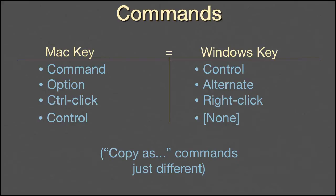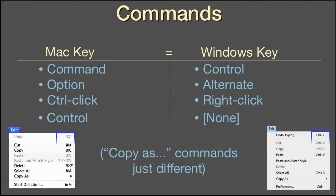Menus, of course, offer access to all the commands. And one item that is identical on both platforms is that the keyboard shortcuts are listed to the right of the respective menu commands. I suppose we have Bill Gates to thank for the fact that Windows now looks so much like the earliest Mac operating system. It certainly made our programmers' job easier.